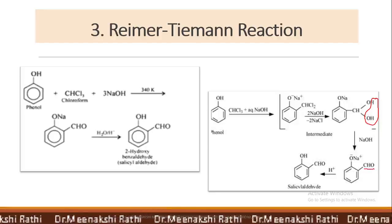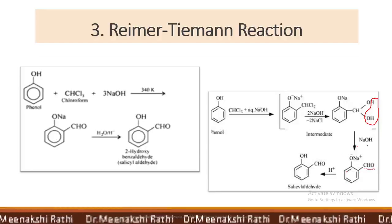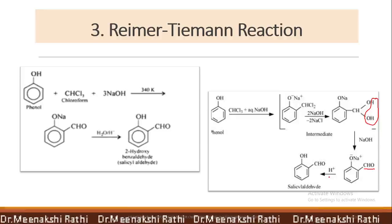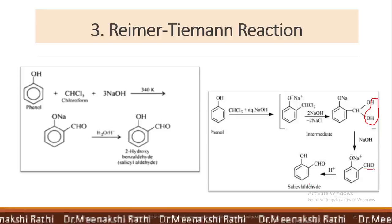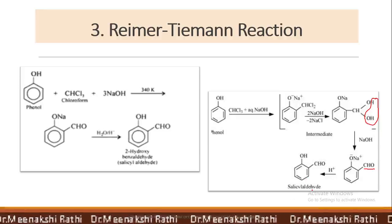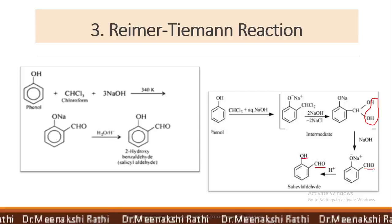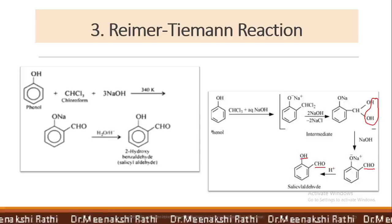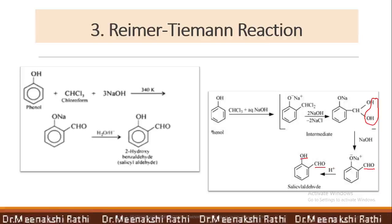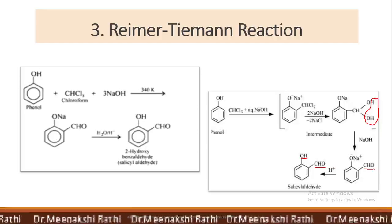The CHO group means an aldehyde group is attached to the benzene ring. This sodium salt or sodium phenoxide ion is finally hydrolyzed and there is formation of salicylaldehyde. In salicylaldehyde, the CHO group is ortho to the phenolic OH group. In this way, to introduce a CHO group ortho to the phenolic group, that reaction is called the Reimer-Tiemann reaction.